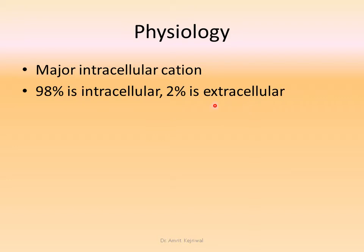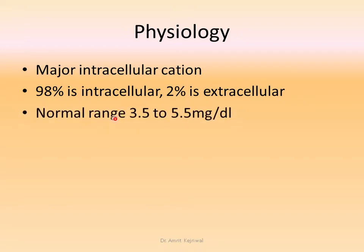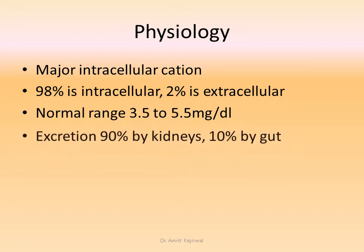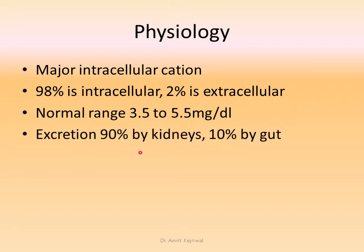But if this 2% increases, then it will cause significant damage. The normal range is 3.5 to 5.5 mEq per liter. Excretion is 90% by kidneys and 10% by gut. So if there is any problem in the kidneys, the chances of having potassium imbalance are more likely than that by gut.